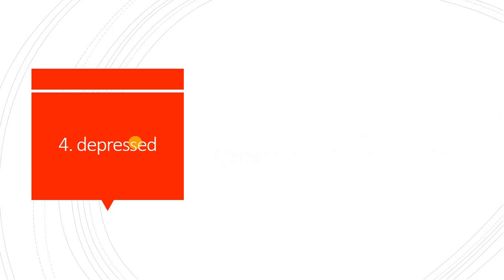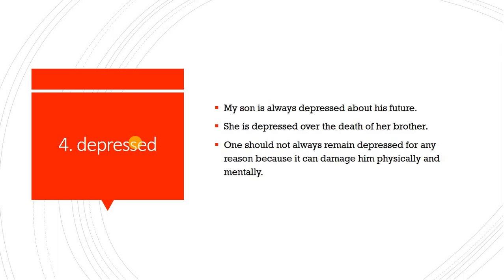The fourth synonym is 'depressed.' Depressed ki meaning jo hai sad se zyada gehri hai — ek to sad hota hai ke udaas hai, depressed means bahut zyada udaas. For example: My son is always depressed about his future. Mera beta har waqt apne mustaqbil ke bare mein udaas rehta hai. Jab is tarah ke thoughts aapke zehan mein chalein to aap hamesha depressed hi rehte hain. Number two: He is depressed over the death of his brother. Woh apne bhai ki maut par bahut ghamzada hai. Number three: One should not always remain depressed for any reason because it can damage him physically and mentally. Kisi bhi wajah se insaan ko chahiye ke woh har waqt depressed na rahe, kyunke us se us ko nuqsan ho sakta hai — zehni bhi aur jismani bhi.